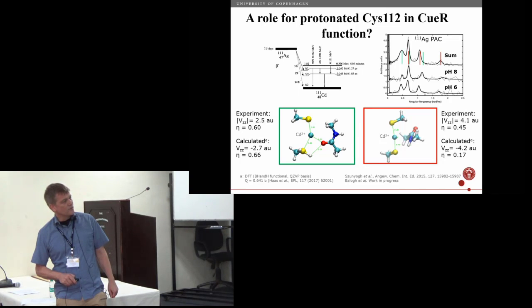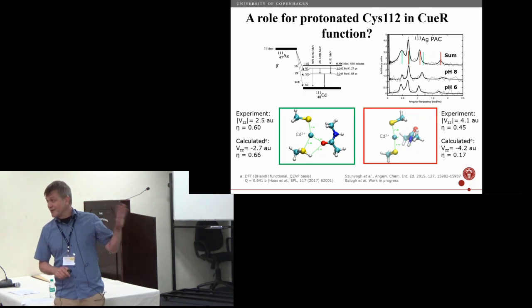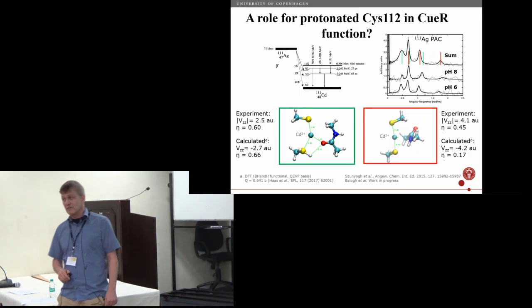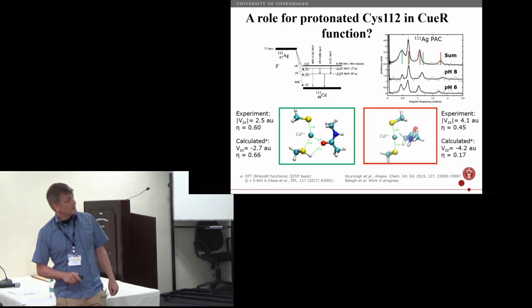The experimental data tells us that the Vzz is 4.1 atomic units and eta is 0.45. This very simple model system—this is preliminary data we haven't published, we will do better model systems—but this gives you numbers which are in reasonably good agreement with these experimental data. The other, the green signal up here, gives you another set of data which also agree with this structure where we have added this proton.